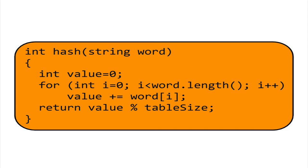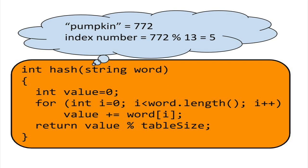Suppose the hash function takes a string as its parameter, and then it adds up the ASCII values of all the characters in the string. Then it mods the sum of these ASCII values by the table length. If the key is a word like pumpkin, and the table is the length of 13, then the resulting index number would be 5.